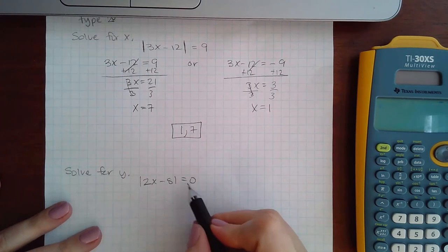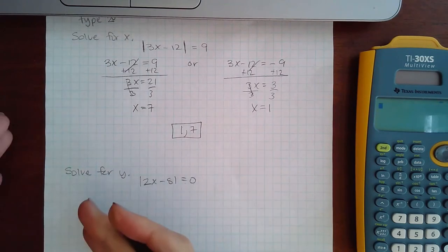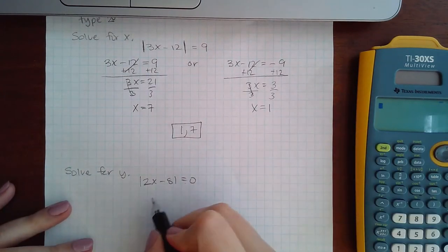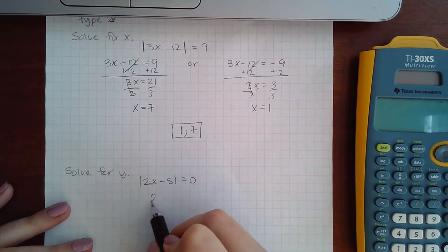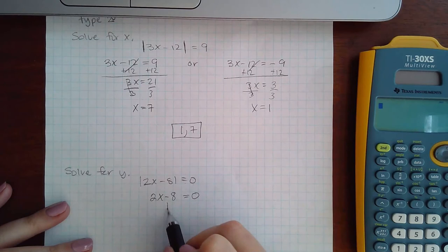Now over here we have it equal to 0, which means I don't need to do the positive and the negative because there's no such thing as negative 0. So I'm just going to take what's on the inside and equal it to 0 and then solve.